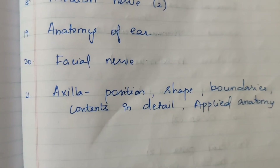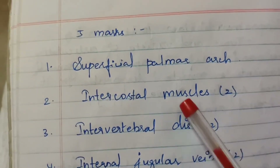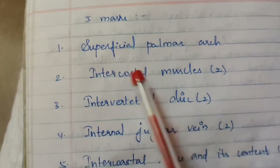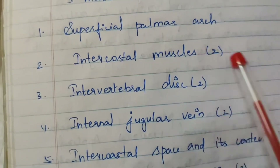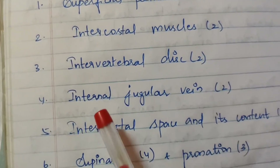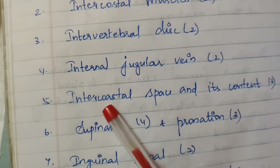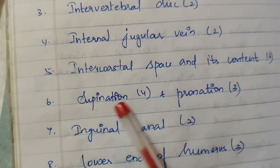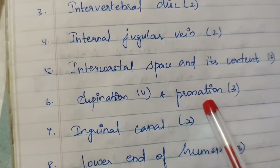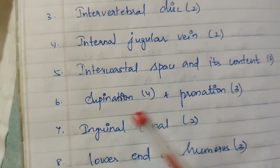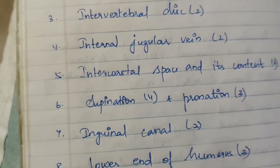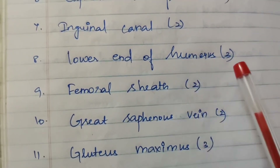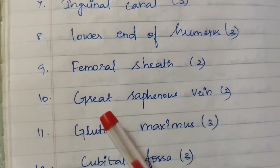Now for the five-mark repeated questions. First: superficial palmar arch. Second: intercostal muscles. Then intervertebral disc, internal jugular vein, intercostal space and its contents. Supination — asked 4 times. Pronation — asked 3 times. Also: inguinal canal — 2 times, lower end of humerus — 3 times, femoral sheath — 2 times.